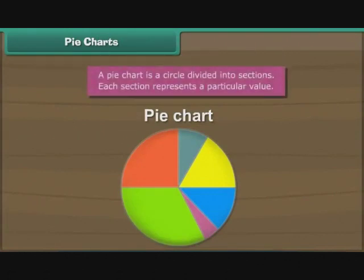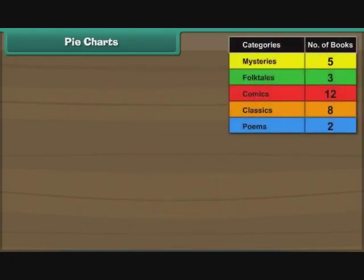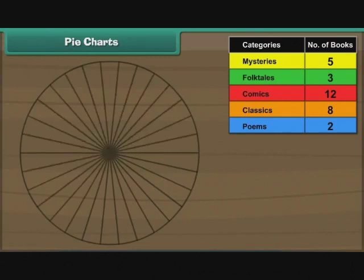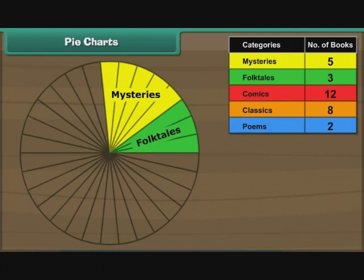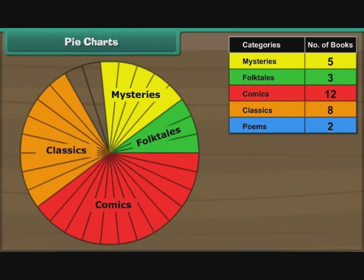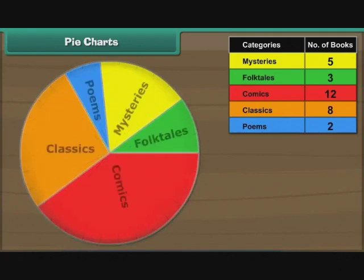A pie chart is a circle divided into sections. Each section represents a particular value. Let us now organize Ravi's data with the help of a pie chart. Here is a circle divided into 30 sections, where each section represents a book. Let us color five adjacent sections yellow and write mysteries. Color the next three adjacent sections green and write folktales. Now count the next 12 sections, color them red and write comics. Next, count eight adjacent sections, color them orange and write classics. Finally, color the remaining two sections blue and write poems. The pie chart is ready.